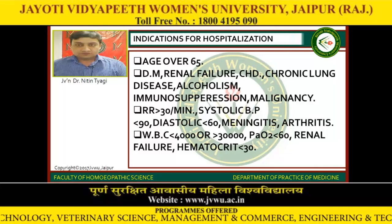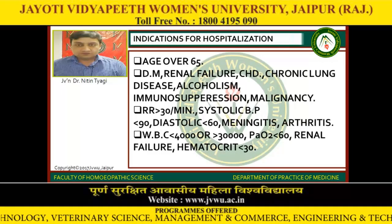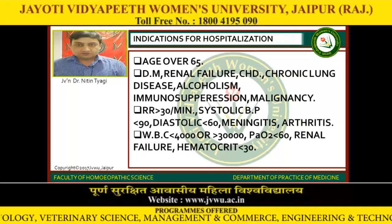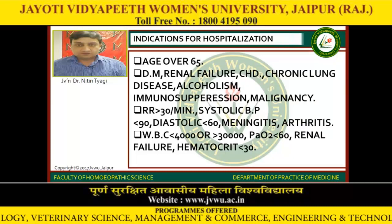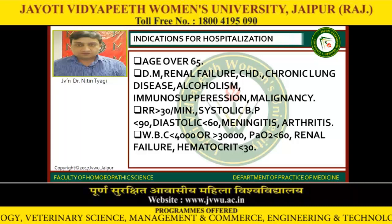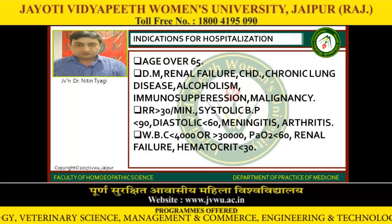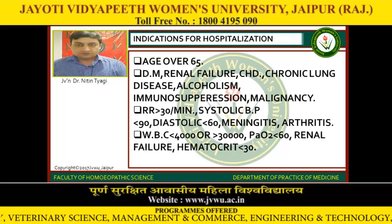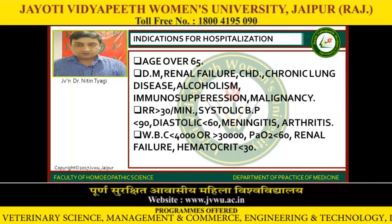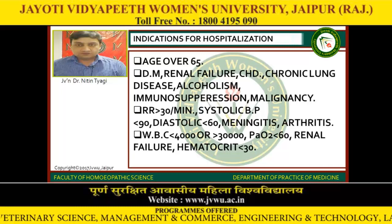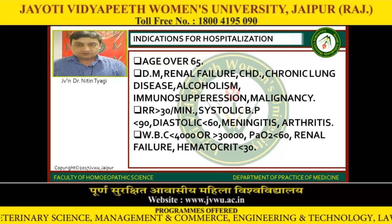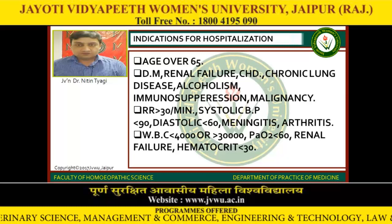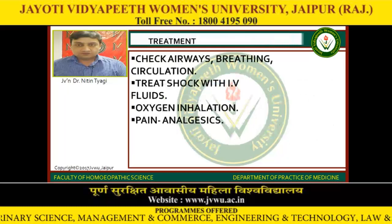Indications for hospitalization: age over 65 years, diabetes mellitus, renal failure, congenital heart disease, chronic lung disease, alcoholism, immunosuppression, and malignancy. Respiratory rate more than 30 per minute, systolic BP less than 90, diastolic less than 60, meningitis, arthritis. WBC count less than 4000 or more than 30,000. Partial pressure of oxygen less than 60. Renal failure and haematocrit less than 30.